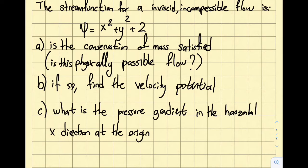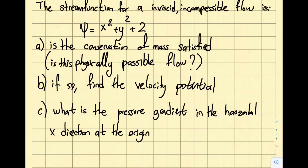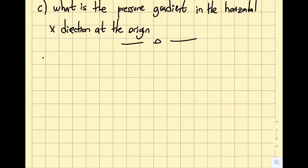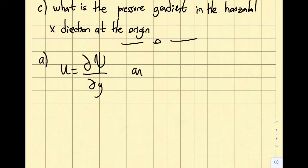I'm going to solve a very comprehensive question. The stream function is given as x² + y² + 2, and this is an implicit incompressible flow. The first part of the question asks whether the conservation of mass is satisfied, or equivalently, whether this is a physically possible flow. Part B asks to find the velocity potential, and the third part asks for the pressure gradient in the horizontal x-direction at the origin. To solve this, I will first find u and v.